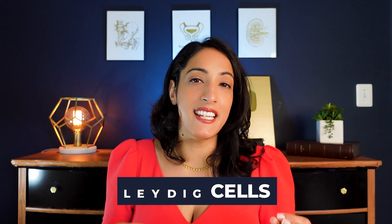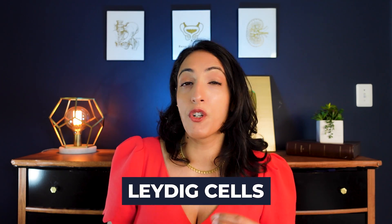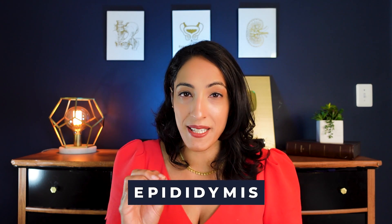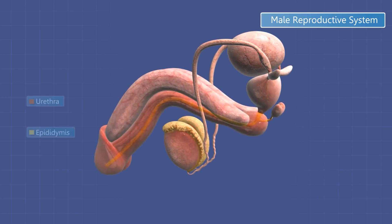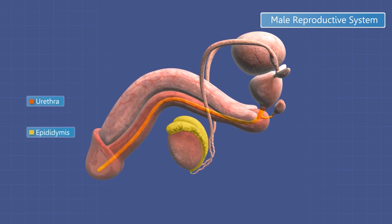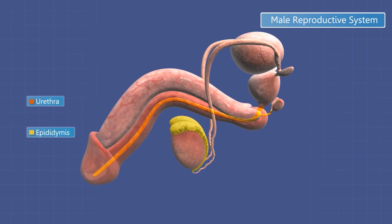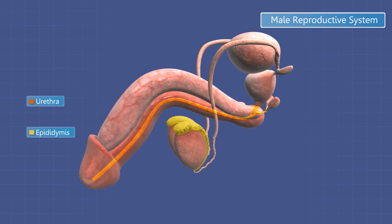Getting back to male anatomy — testosterone is produced in the testicles in particular cells called Leydig cells. These Leydig cells create testosterone, and sperm matures within the testicle and then moves to the epididymis. The epididymis is a cord-like structure that sits on the top and side of your testicle.